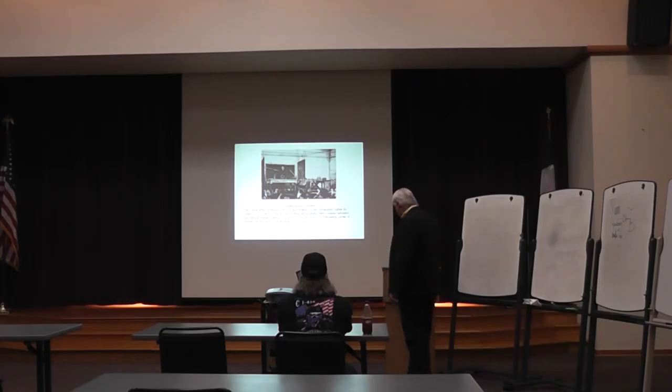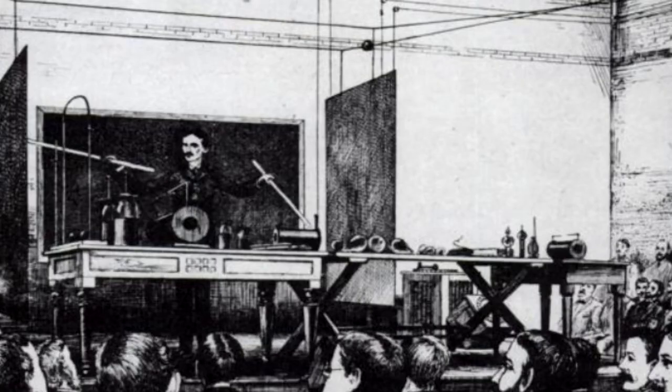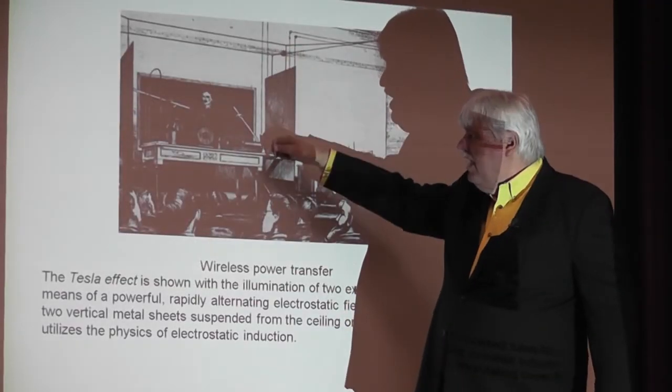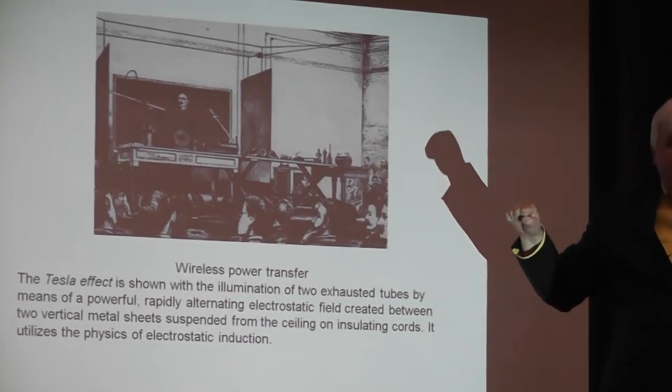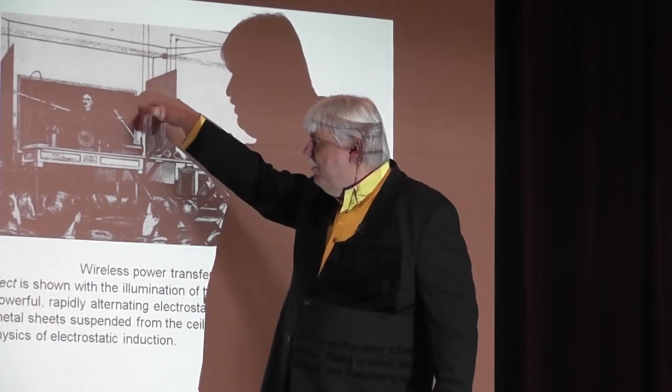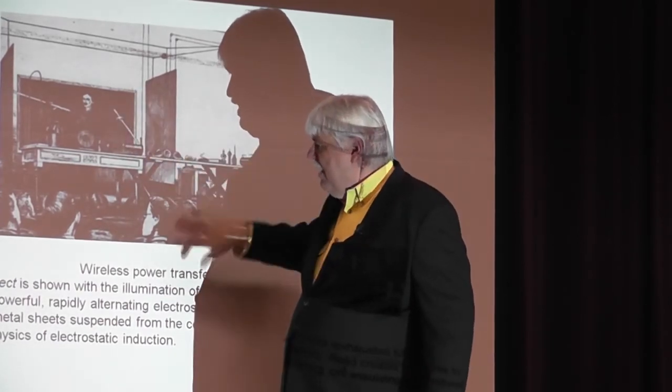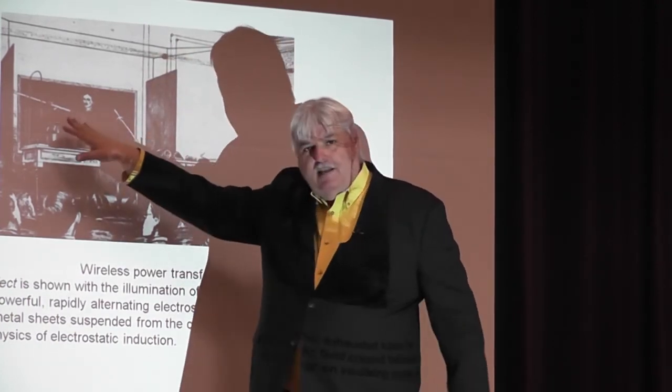Here's another picture of Tesla demonstrating wireless power transfer. He's holding two fluorescent tubes. He has power wires up here containing a high voltage. He would hold those tubes in space and illuminate them. He's standing right here holding these, and you can actually see them lighting up. People could see the demonstration of how this power between these two plates would illuminate those bulbs.